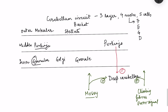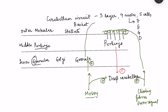Purkinje cells have dendrites which extend into the outer molecular layer, and climbing fibers ascend and make excitatory connections with these dendrites, thereby exciting the Purkinje cells. Mossy fibers, on the other hand, excite the granule cells, and via those granule cells they excite the Purkinje cells.